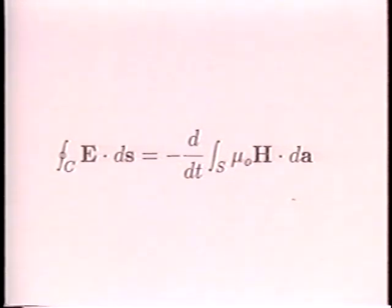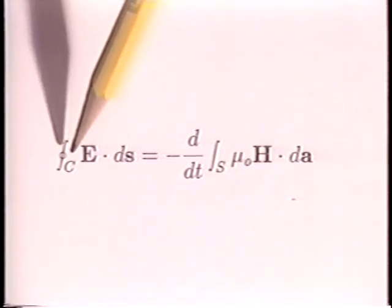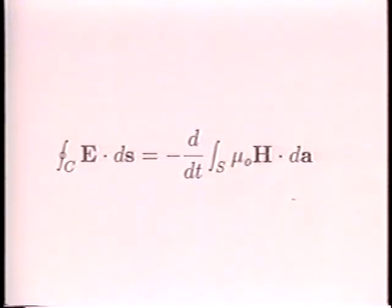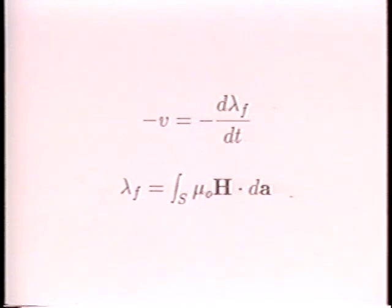Applied to the coil, the line integral on the left becomes the negative of the terminal electromotive force, or voltage. Here is the induced voltage in the coil. The total flux linked by the coil is lambda sub f.